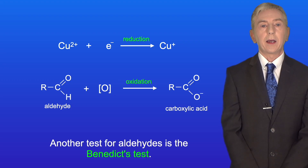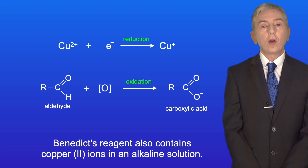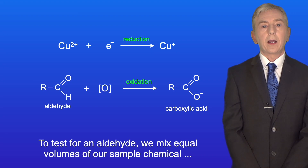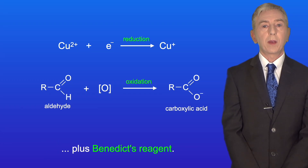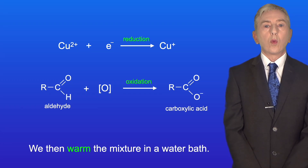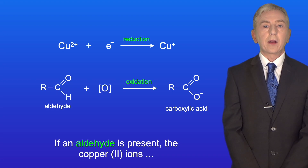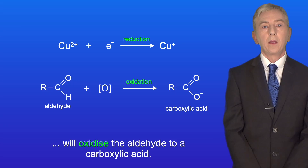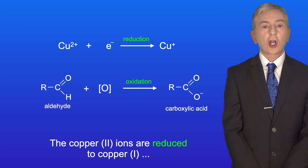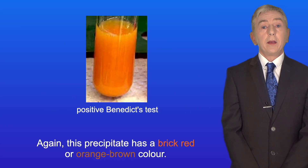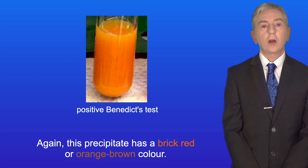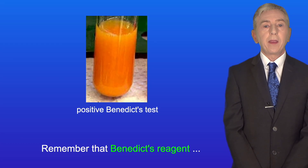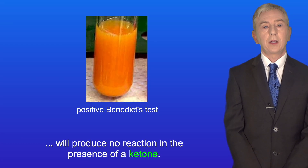Another test for aldehydes is the Benedict's test. Benedict's reagent also contains copper(II) ions in an alkaline solution. To test for an aldehyde, we mix equal volumes of our sample chemical and Benedict's reagent, then warm the mixture in a water bath. If an aldehyde is present, the copper(II) ions will oxidize the aldehyde to a carboxylic acid, and the copper(II) ions are reduced to copper(I), forming a brick red or orange-brown precipitate of copper(I) oxide. Benedict's reagent will produce no reaction in the presence of a ketone.